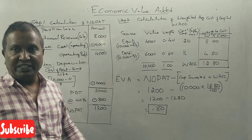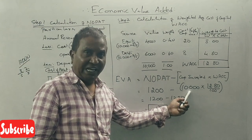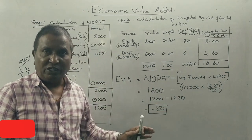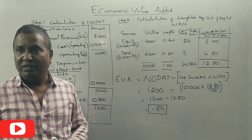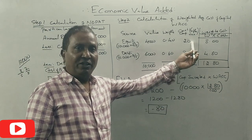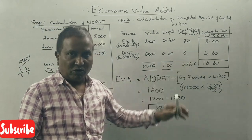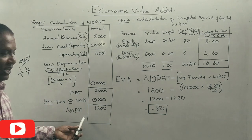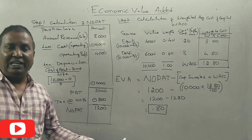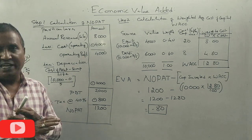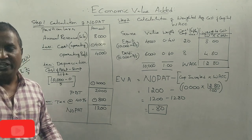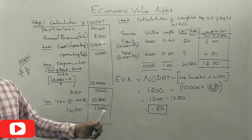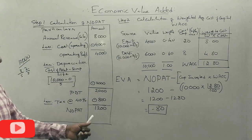Since EVA is negative at Rs. -80, the investment of Rs. 10,000 did not generate sufficient returns to cover the cost of capital. The NOPAT of Rs. 1,200 was not enough to cover the capital charge of Rs. 1,280. This represents a loss in economic value. Thank you.